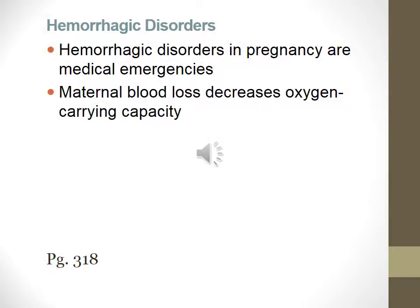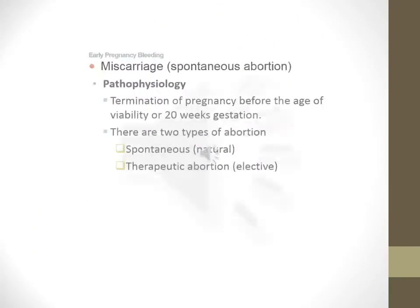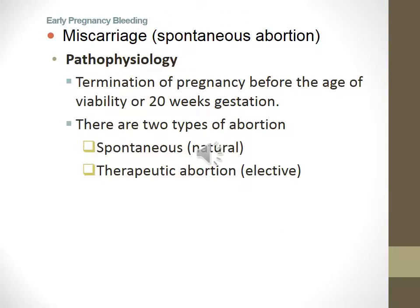Hemorrhagic disorders in pregnancy are medical emergencies. Maternal blood loss decreases the oxygen-carrying capacity, which puts the fetus at risk. Miscarriage, also known as spontaneous abortion, is the termination of pregnancy before the age of viability at 20 weeks gestation. There are two types: spontaneous abortion, which is natural, and therapeutic abortion, which is elective.